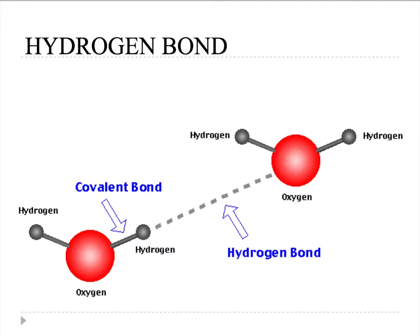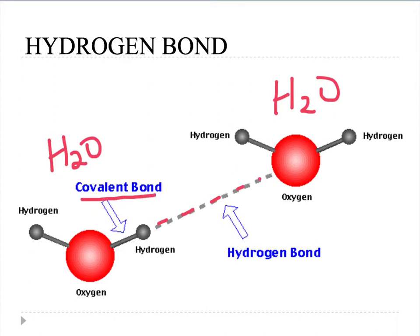Another type of attraction between molecules is what we call a hydrogen bond, indicated by dashed lines. It forms between at least two water molecules. Don't confuse it with a covalent bond, which is part of the water molecule itself — the covalent bond is what attaches hydrogen to oxygen.